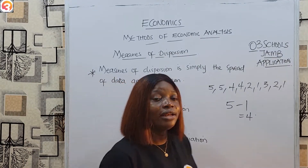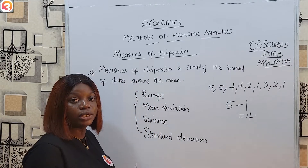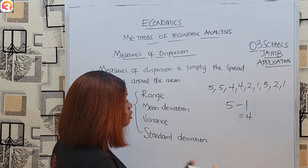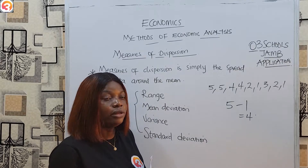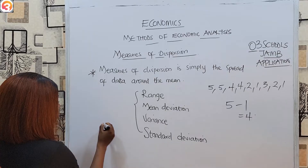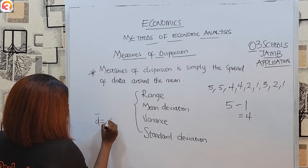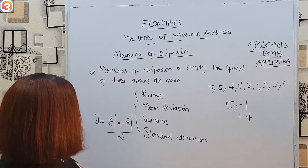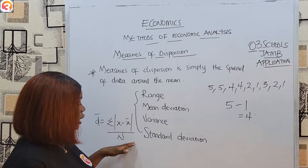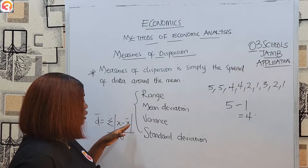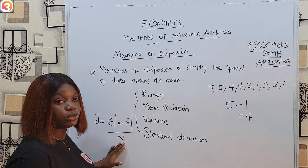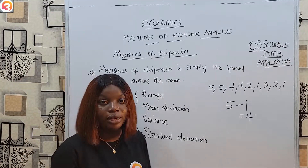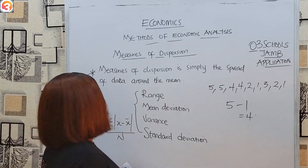The next thing we look at is the mean deviation. The mean deviation is simply an average of the set of distances between data and the mean. The formula for mean deviation is: D equals summation of |x minus x̄| over n, where x is the element, x̄ is the mean, and n is the number of elements or the frequency.